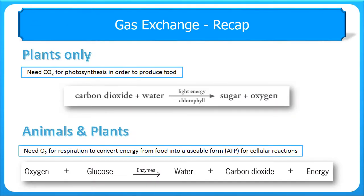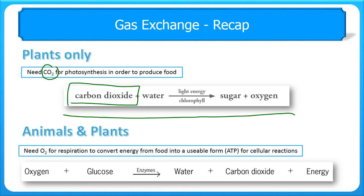We've previously identified the gases that need to be exchanged between organisms and the environment. The important gas is carbon dioxide, which is required for plants in order to carry out photosynthesis. As we can see from the word equation here, it's a way of plants creating the food that they require to survive, taking in this carbon dioxide gas.